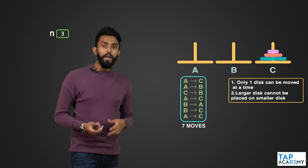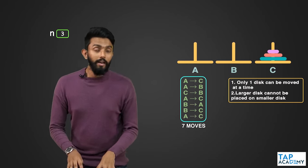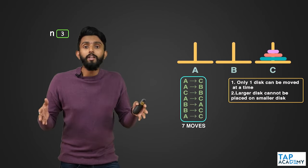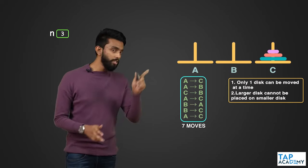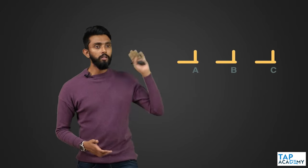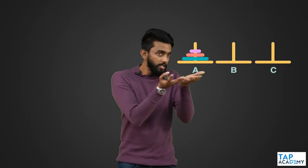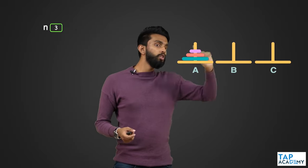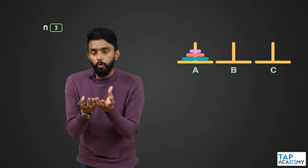Now the aim is to solve this problem using a program — to recursively solve it. How can we write a recurrence relationship, a set of recursive function calls, to solve the Tower of Hanoi problem? The key idea is to break the problem of moving n discs from source A to destination C into smaller subproblems.